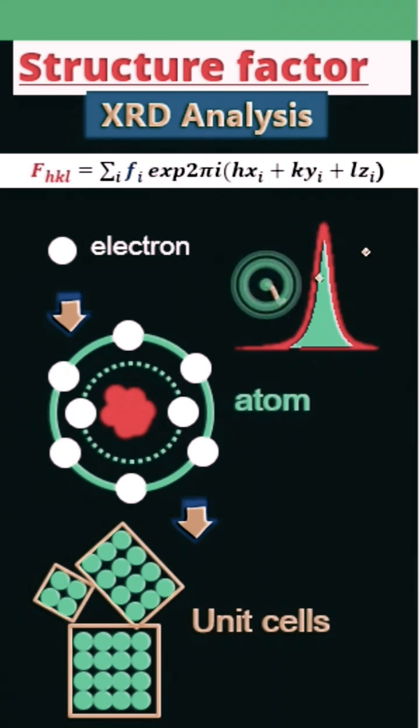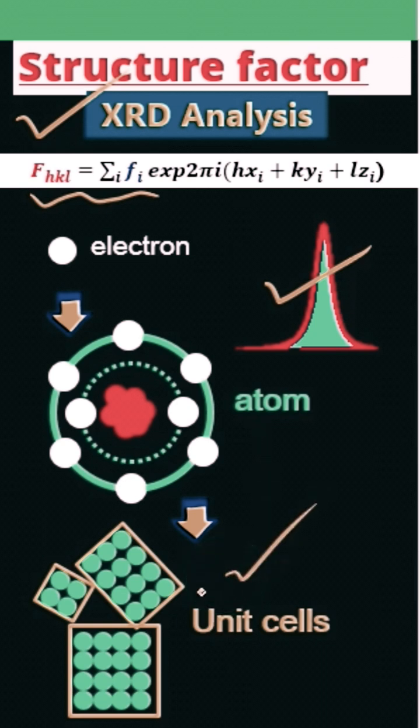XRD peak intensity depends on many parameters. The most important one is the structure factor. This is the structure factor formula. We know that crystals are made from unit cells, unit cells are made from atoms, and atoms are made from electrons.